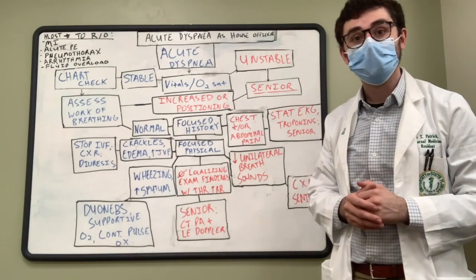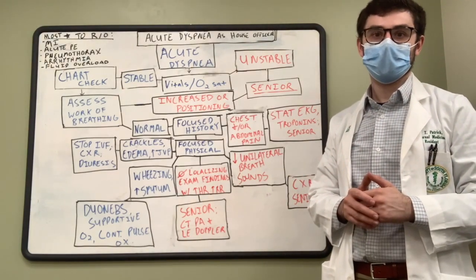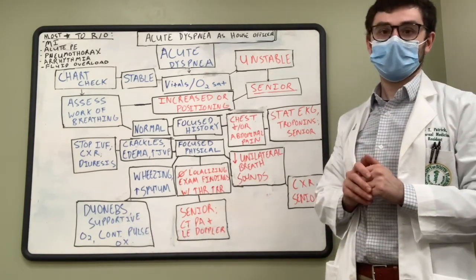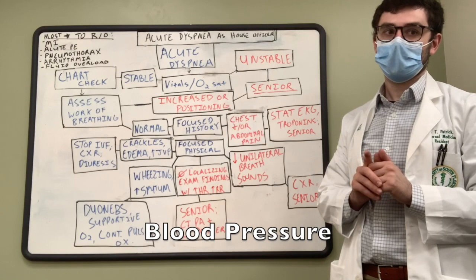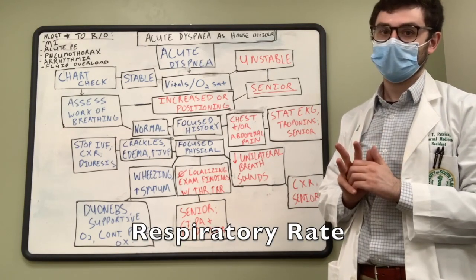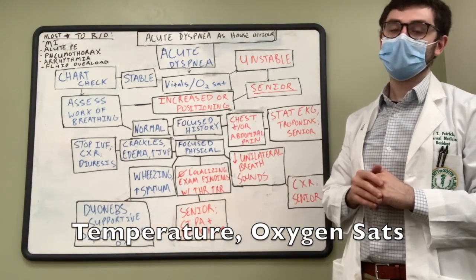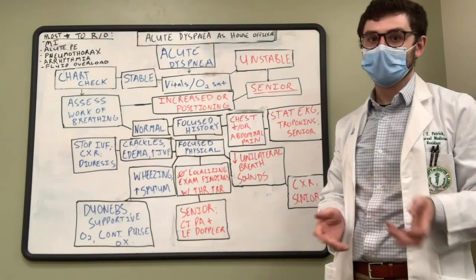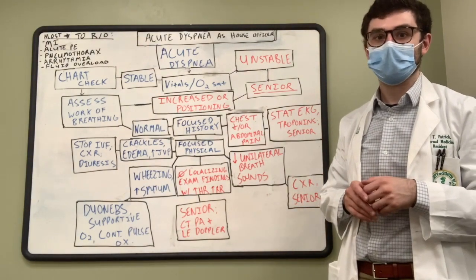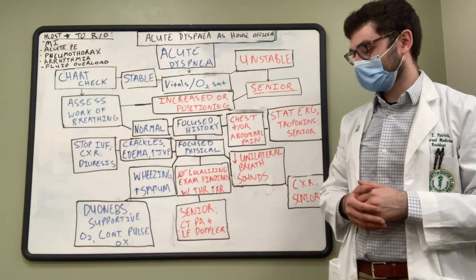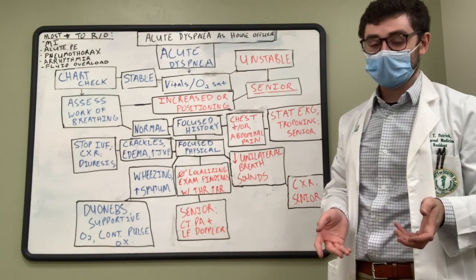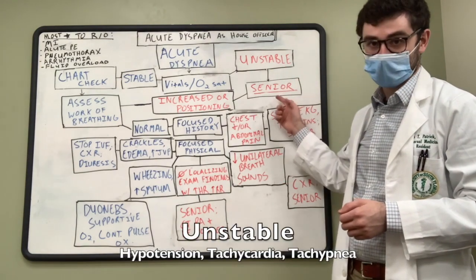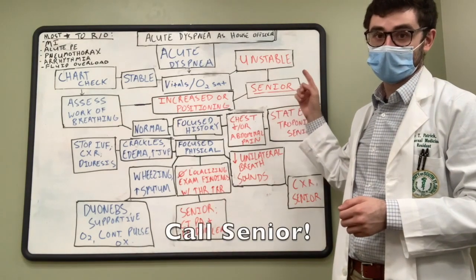Let's say the nurse calls you and says, 'Doctor, my patient can't breathe.' What are some things you're going to want to know? First and foremost, I like to know the patient's vital signs — vitals are vital. Ask: how's the blood pressure, the respiratory rate, does the patient have a fever, and how are the oxygen saturations? If the nurse tells you the patient is hypotensive — say, below 90 over 60 — or the respiratory rate is 30, or the O2 sats are 85%, these are all concerning. If the vital signs are overall unstable, tell your senior, because this patient may need a higher level of care.